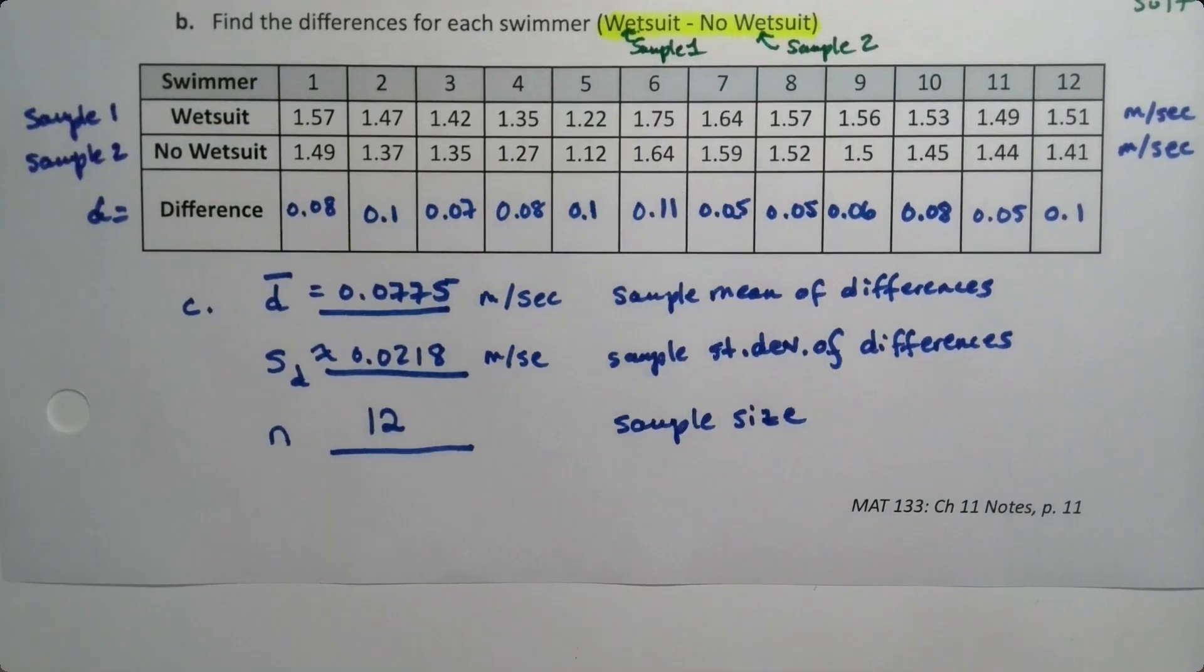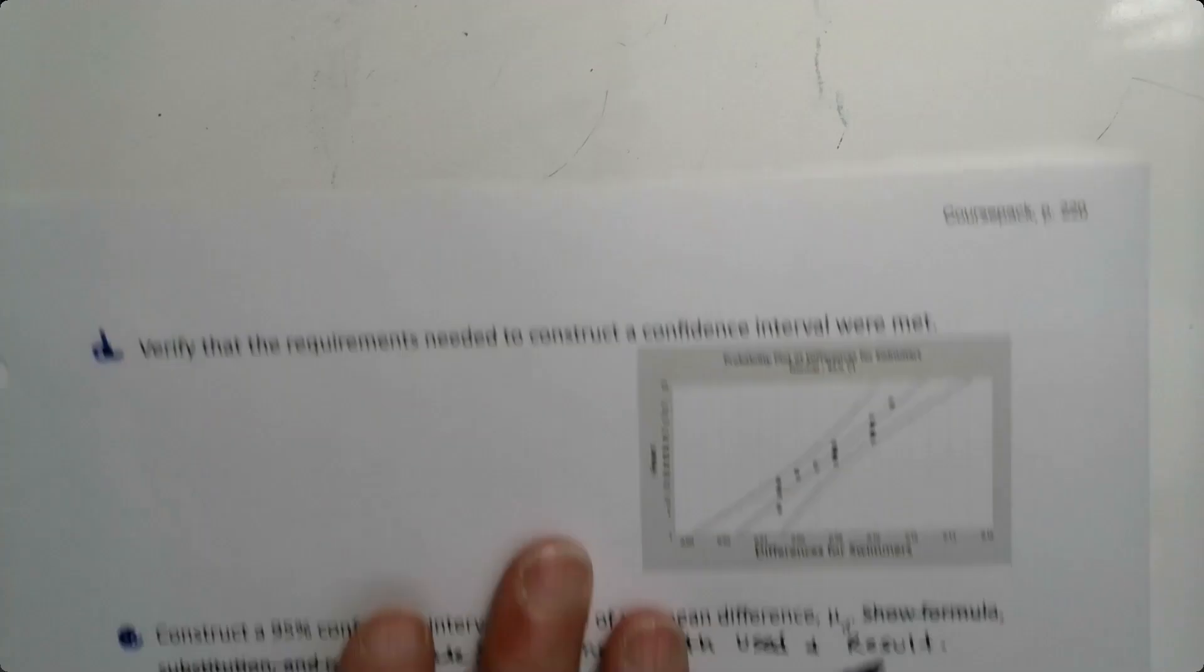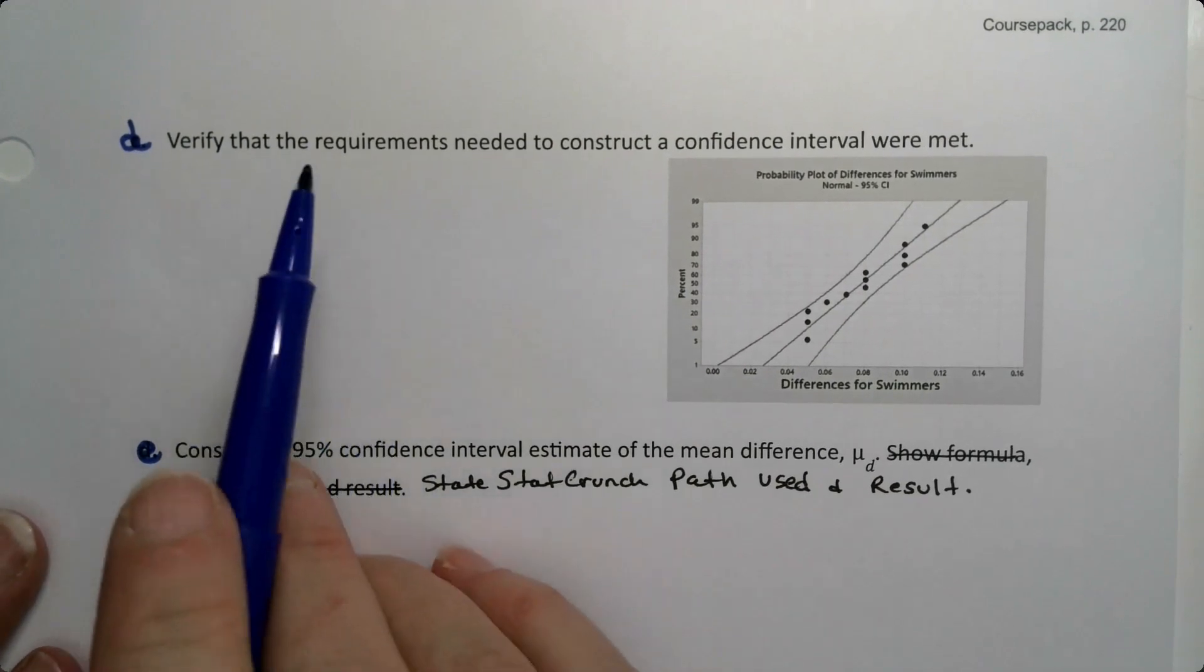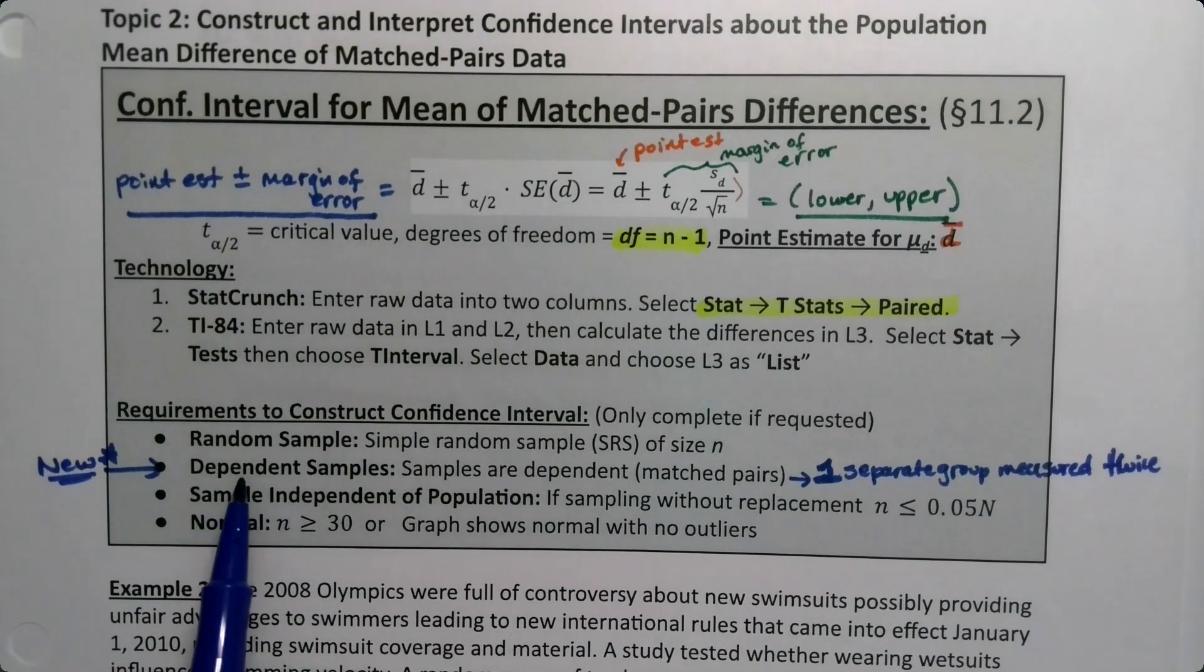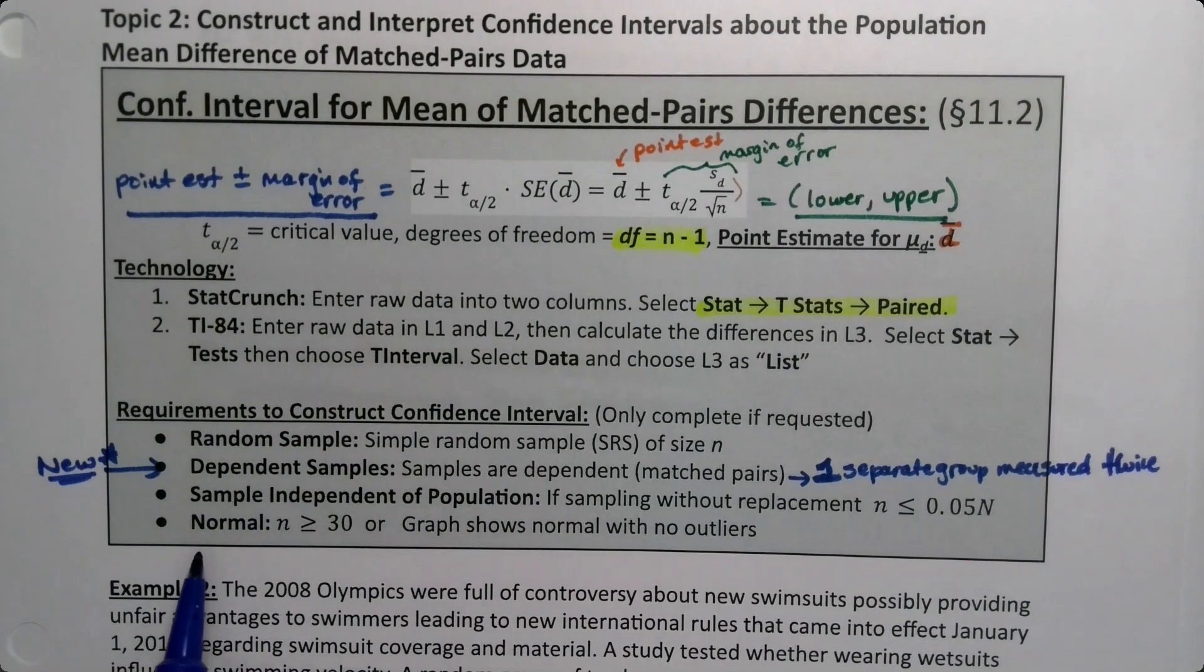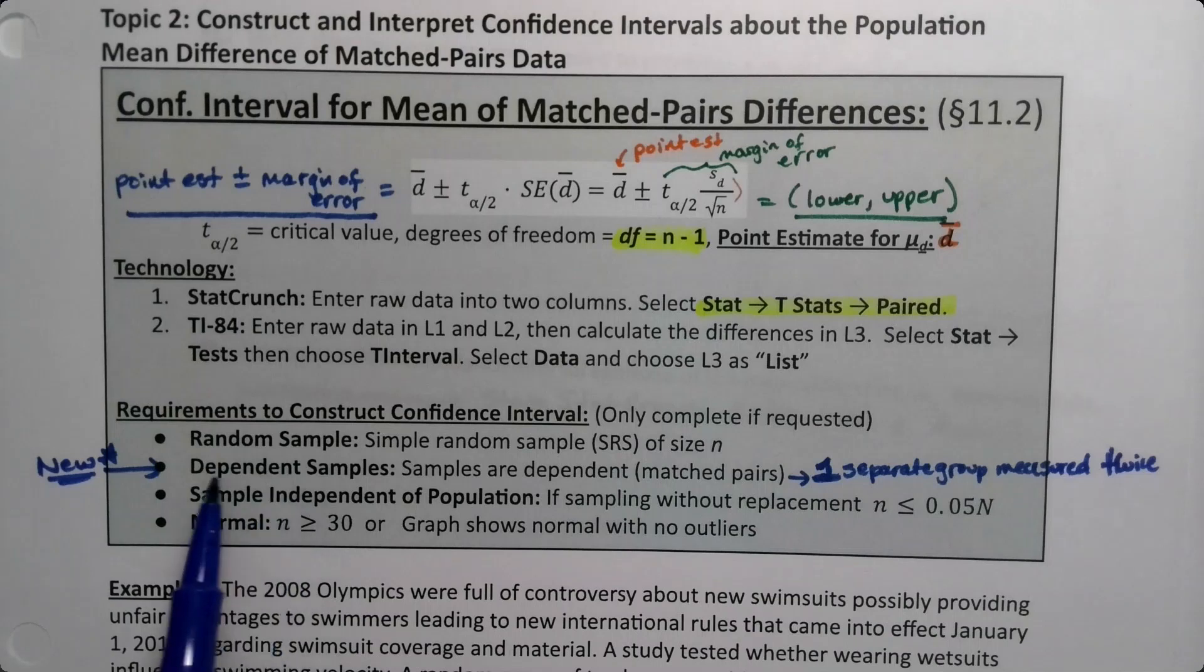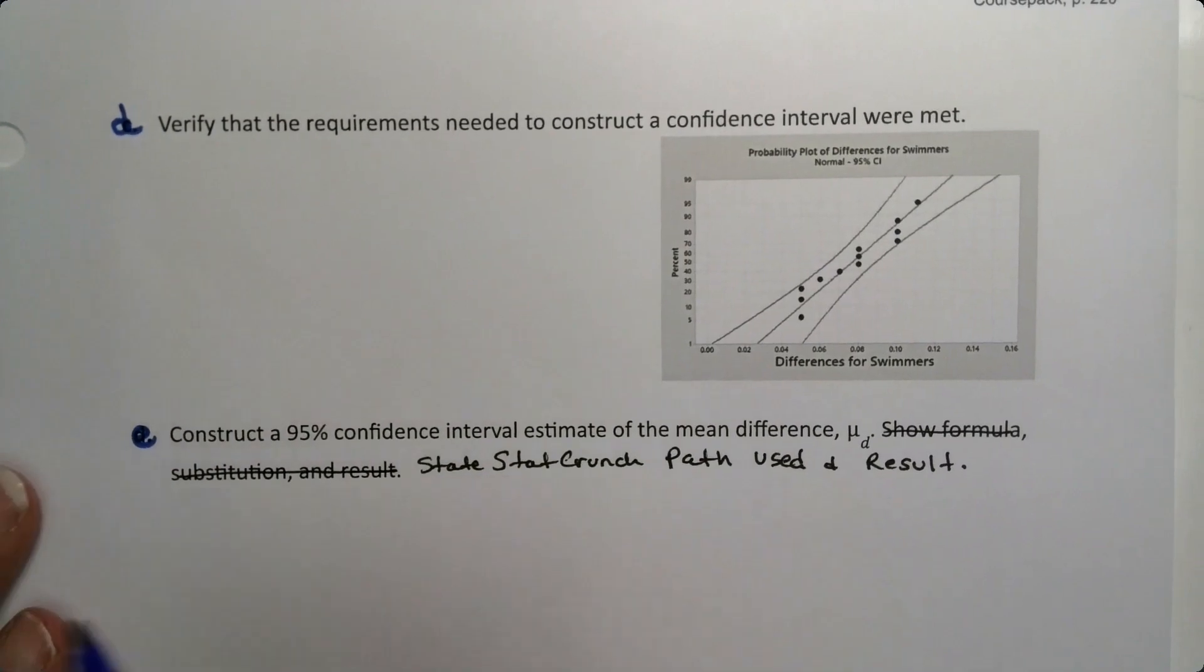If I put a C in there, which I'm going to for future, then that will reletter this page, so this will be D. We're going to verify our requirements. It's random, dependent, independent of the population, and normal. There's that tension where it seems like dependent and independent cannot both happen, but they can, they're talking about different things. Dependent is that it's one group of swimmers, independent is because that group of swimmers is less than 5% of the population.